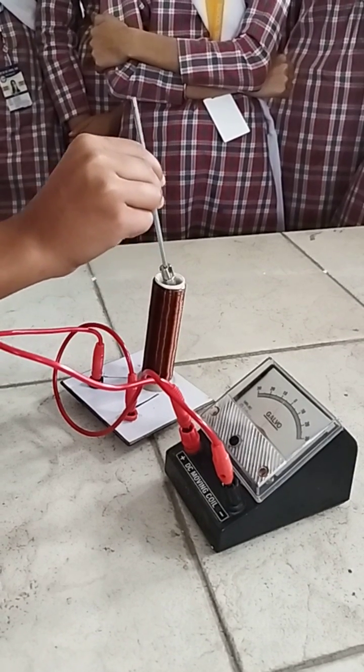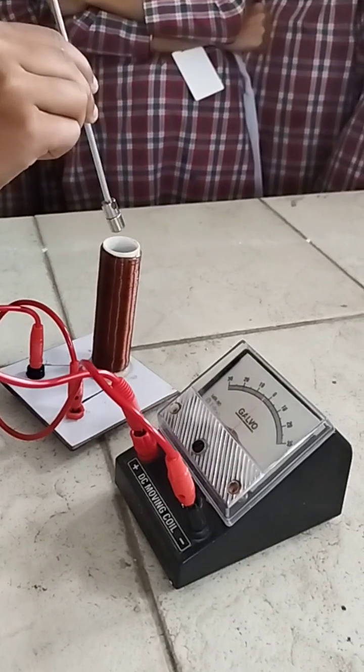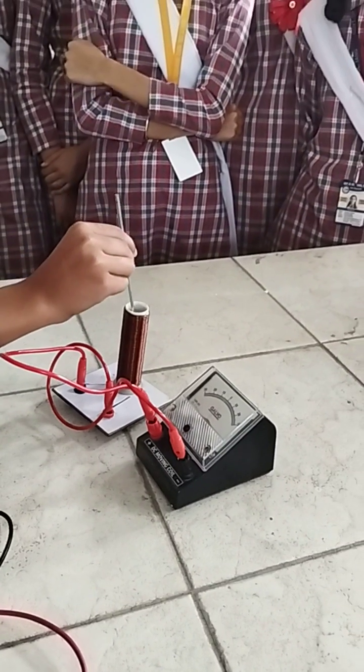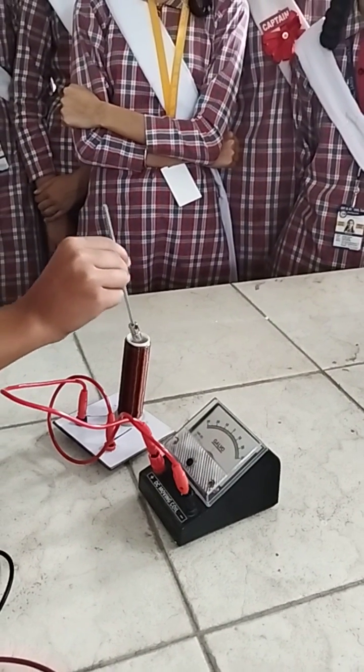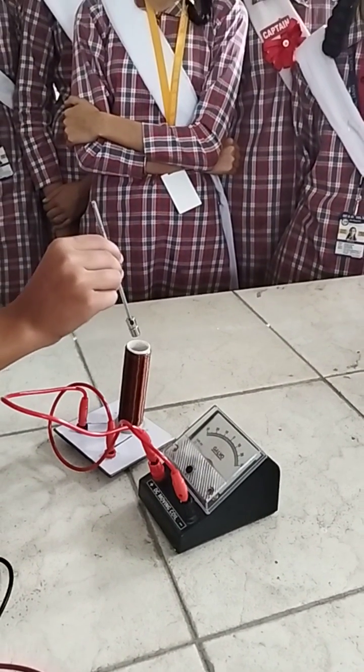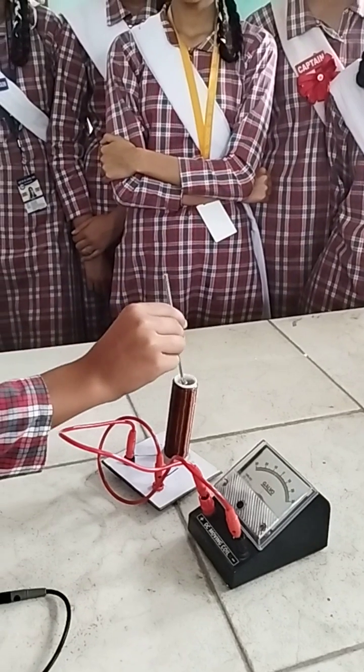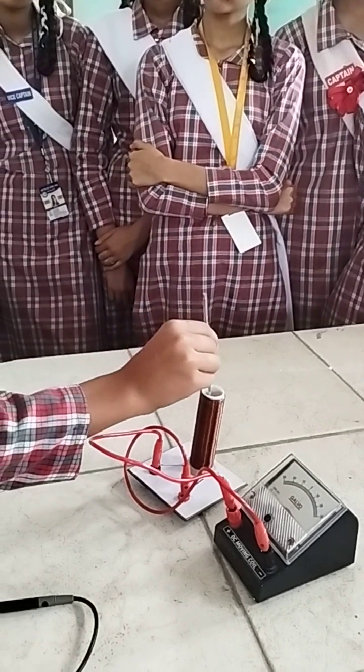At a slower rate of change of flux, then what you see? The EMF is also lesser. So we can conclude that the rate of change of magnetic flux and the EMF induced are in the same proportion.